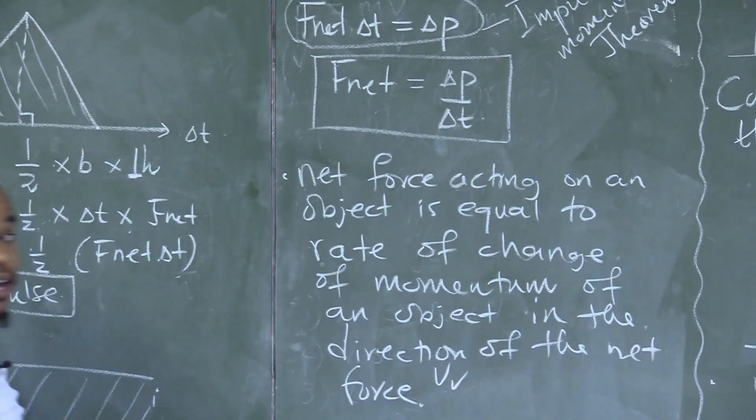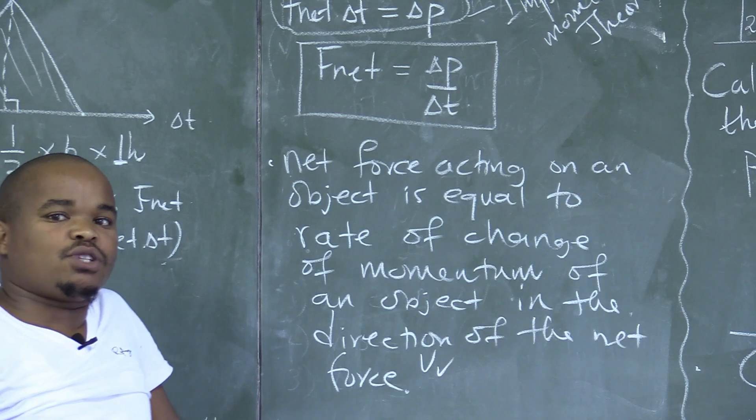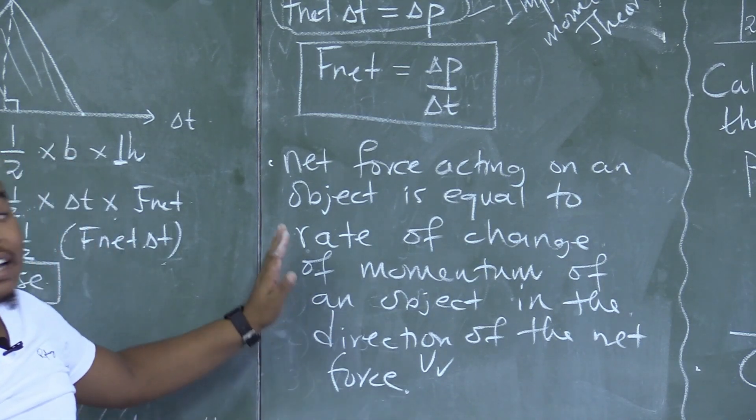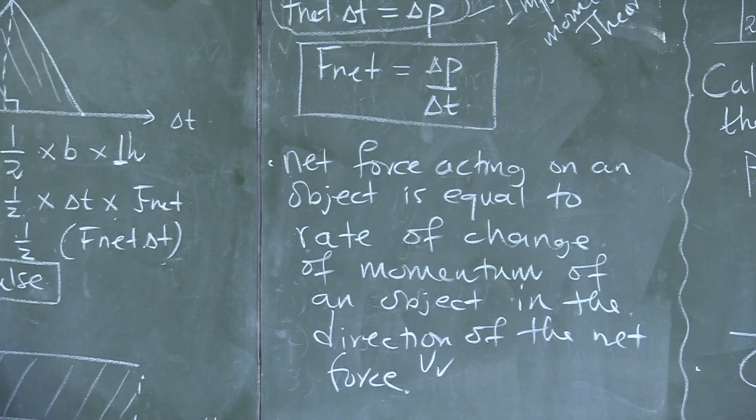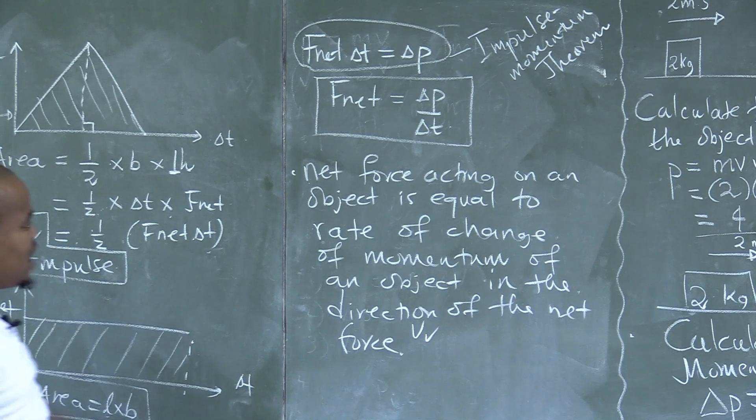You are exempted. You can explain or you can state Newton's second law of motion if and only if you are doing grade 12. The net force acting on an object is equal to the rate of change of momentum of an object in the direction of the net force. Grade 12, be advised.